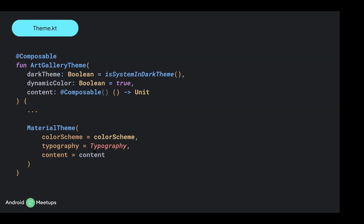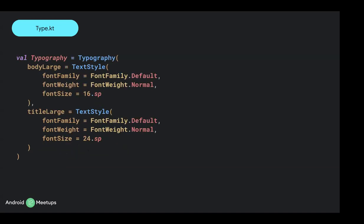For the art gallery application, we are using body large and title large with specific values. Font weight is normal, 16sp for body large, and for title large, it's the default normal weight with a font size of 24sp. Now we are done setting up the themes — we've updated the colors and typography. What's left is to modify the old imports that use Material Design 2 to use the Material Design 3 library.